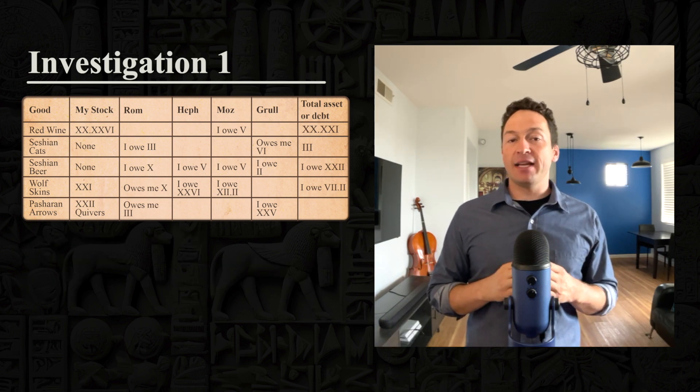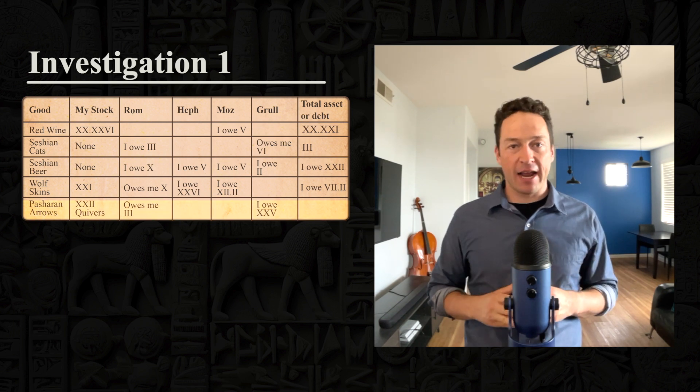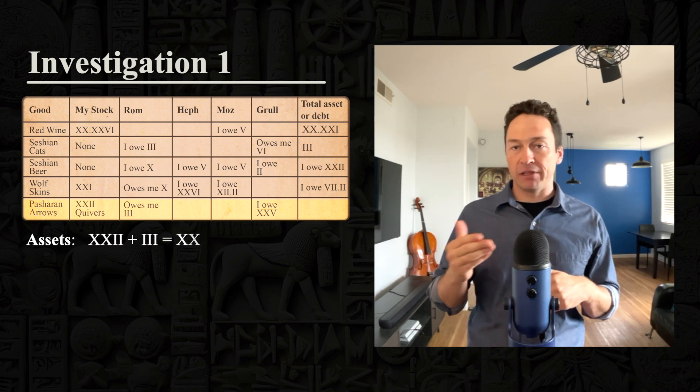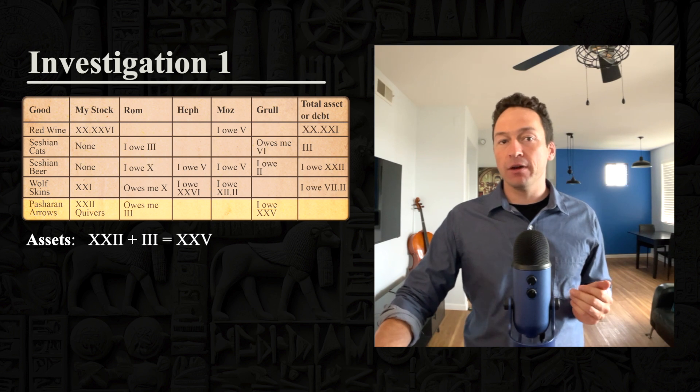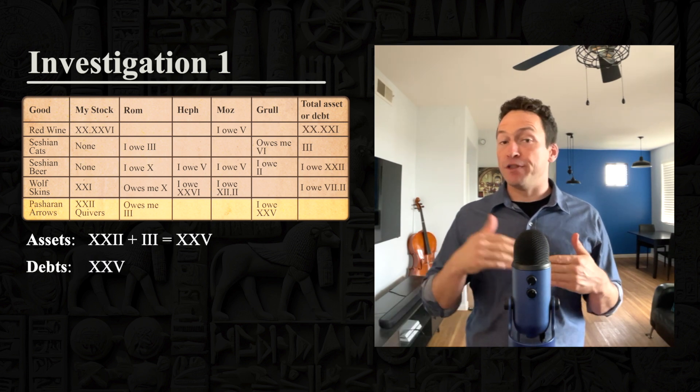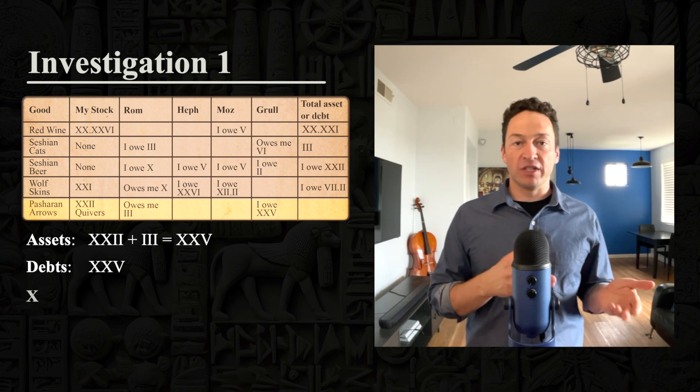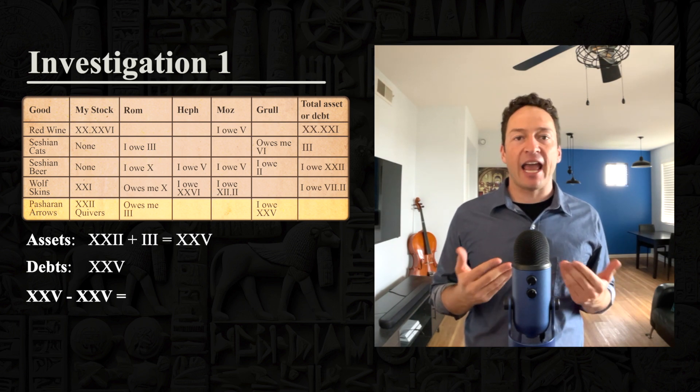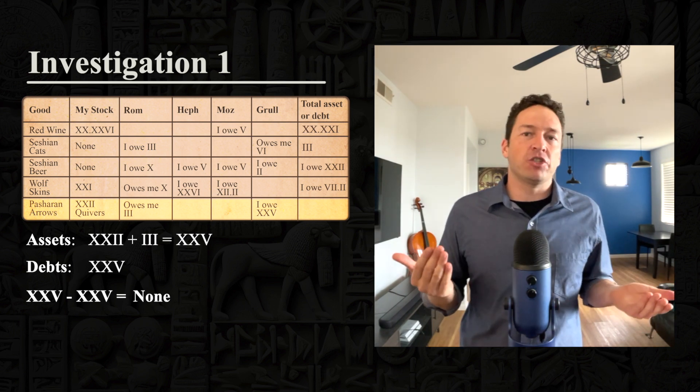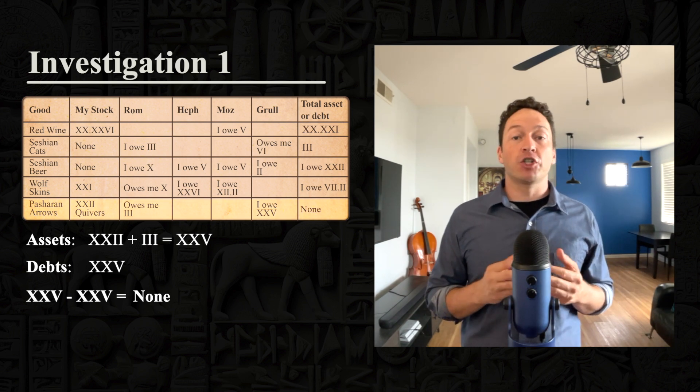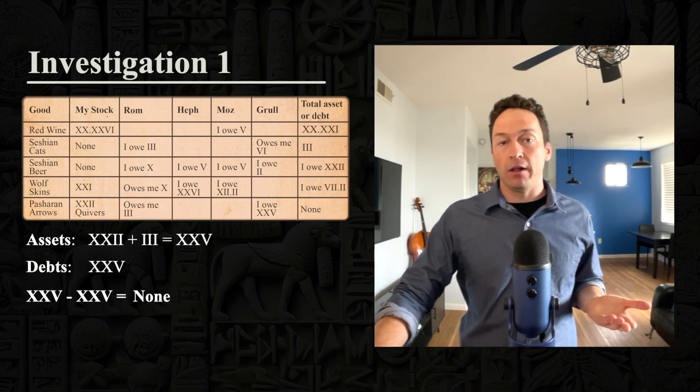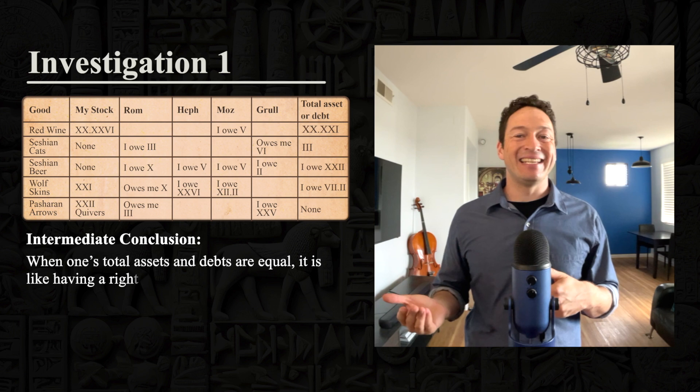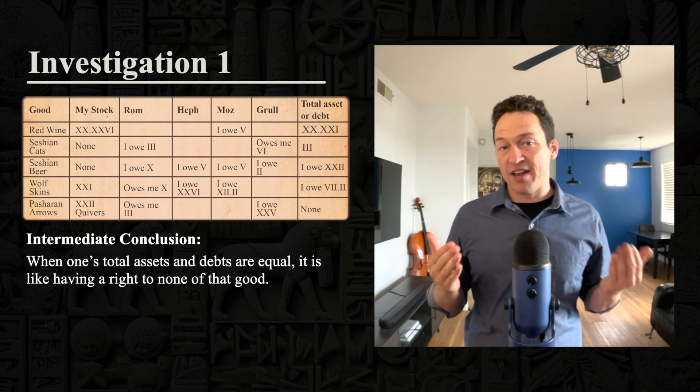Lastly, he's going to find his total asset or debt of Pasharan Arrows. So like last time, he is going to add up all of his assets. That's two, ten, and two plus three. So that's two, ten, and five total assets of Arrows. Next, he's going to use subtraction to account for the debt he owes Grohl. And this is two, ten, and five minus two, ten, and five. So the assets are equal to the debts in this case. It's as though he has no arrows at all. This allows him to come to an intermediate conclusion, which is that when one's total assets and debts are equal, it's like having a right to none of that good.